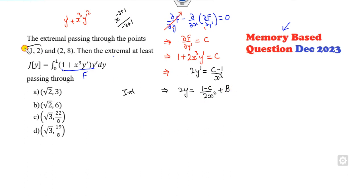Now what is given to you? It passes through (1, 2). What does it mean? y is 2, so it's 4. x is 1, so 1 minus c plus b. It also passes through (2, 8). What does it mean? It's 8, so 16.